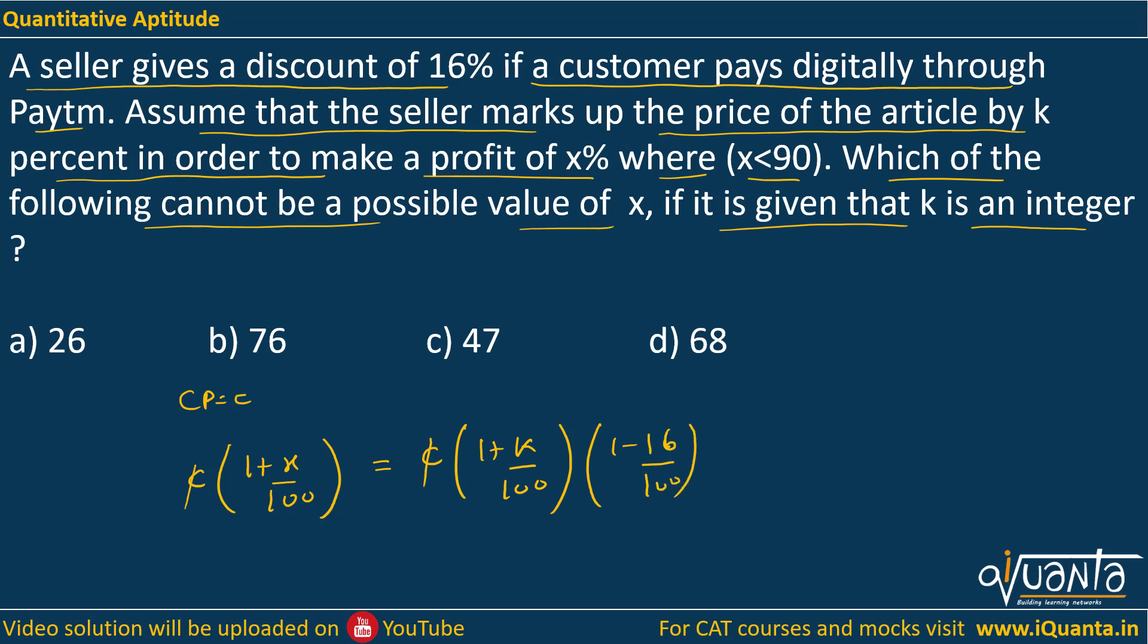So C cancels. If we write the equations we will be getting 100 plus x, then this denominator 100 will cancel one of the hundreds over here. So this will be equal to 100 plus k, then 100 minus 16, that means 84.